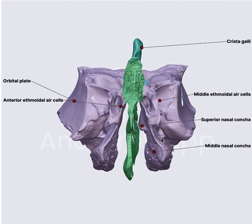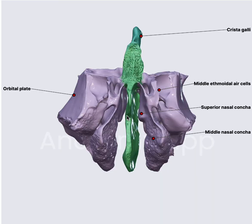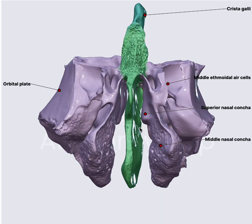We need to understand that whenever there is a deviated septum or any bony deviation, we should not be addressing more than the upper two-thirds. The reason is that the chances of injury to the cribriform plate are high, and that can lead to an iatrogenic CSF leak. Thank you for listening.